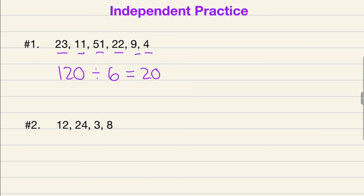Now for number two, add all of your numbers: 12 + 24 + 3 + 8. You should have gotten 47 for your sum. Then divide by how many numbers are in your data set — we have 4 numbers. 47 divided by 4 gives us 11.75. Hopefully you went two for two on the independent practice. After watching this video you can successfully find the mean or average of a data set.